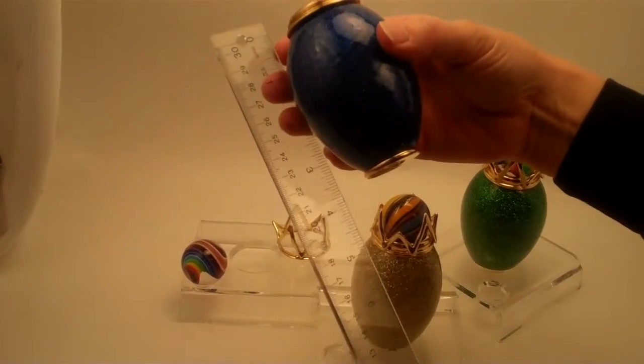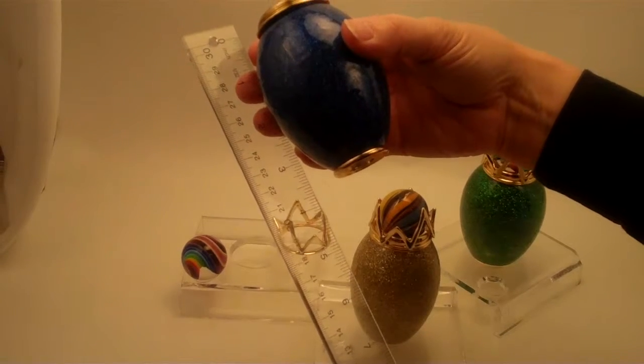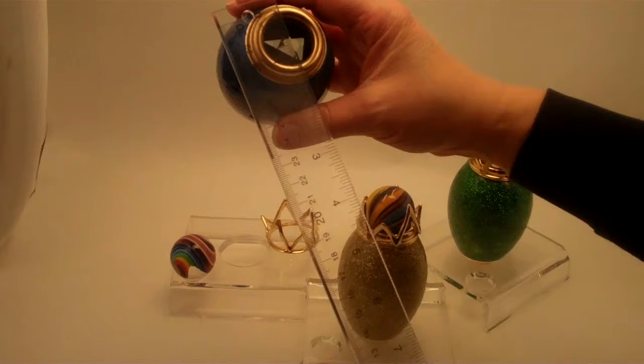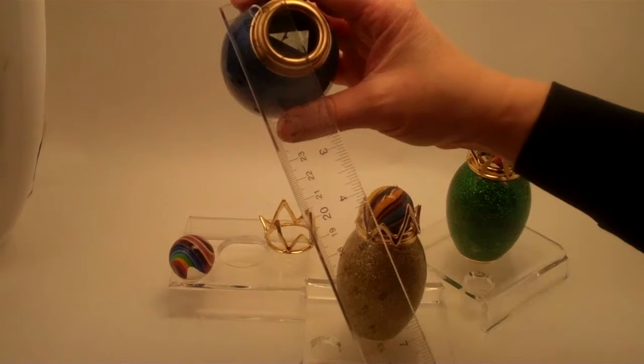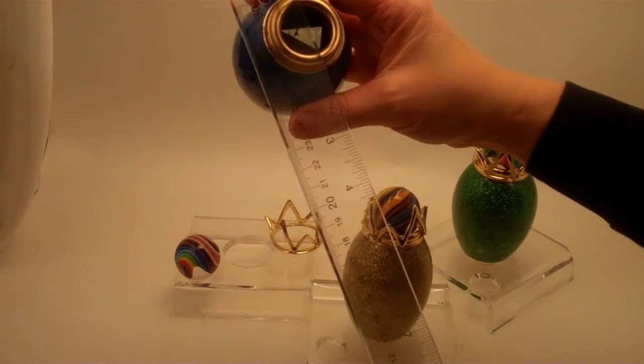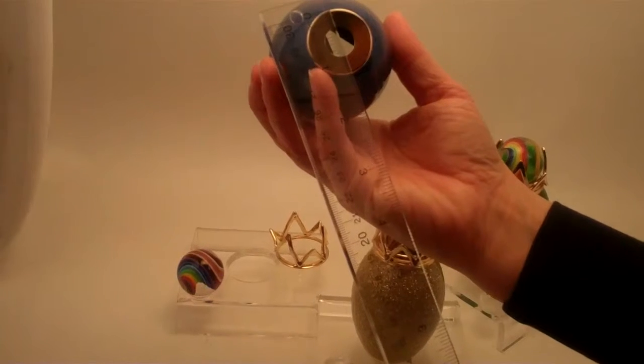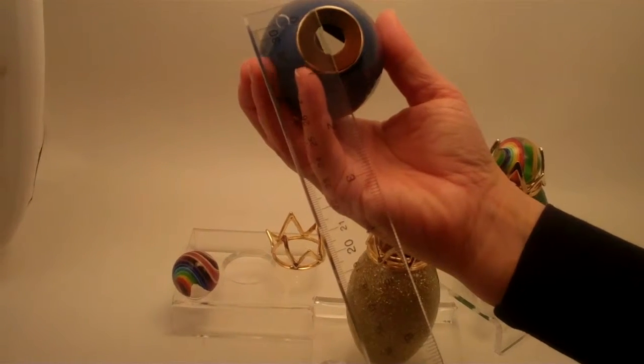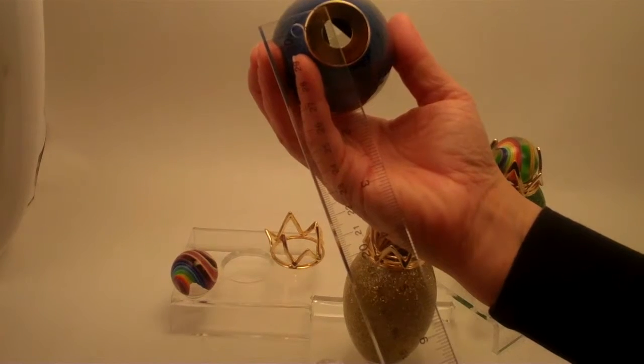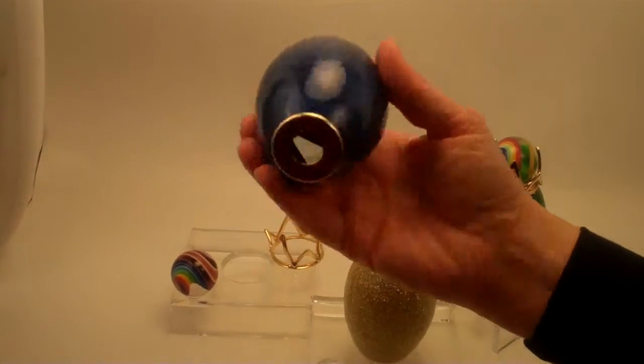The kaleidoscopes themselves without the crown are just under four inches—about three and three-quarter inches in height. The diameter is approximately an inch and a quarter, or actually the full casing is an inch and a half. The eyepiece itself, the brass portion, is an inch and a quarter. The opening for the mirror system is approximately just over a half inch in width.